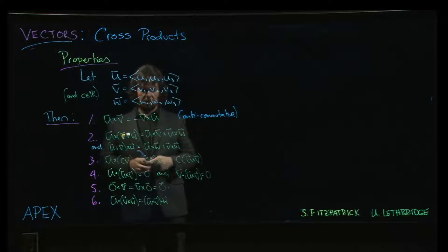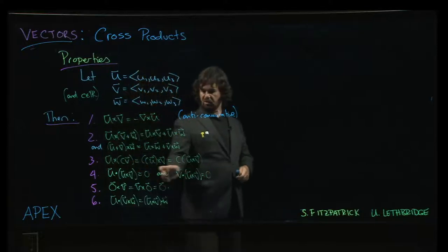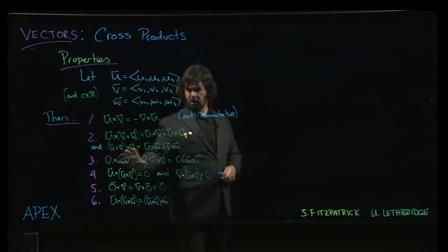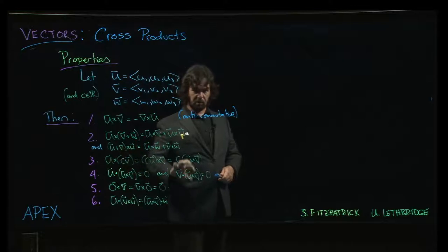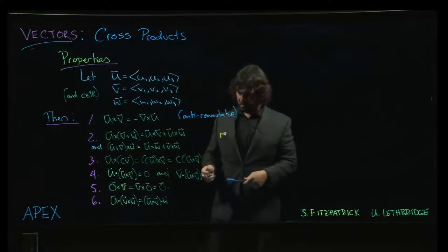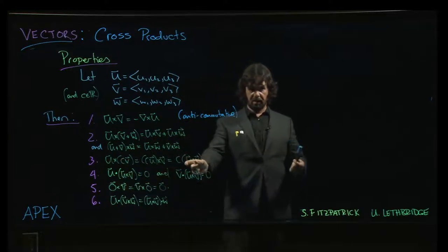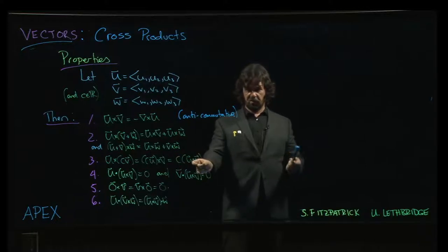Also, cross product does behave well with respect to scalar multiplication. So if you have a scalar you can move it around. You can put it with the first vector or the second or you can pull it out altogether. Remember that the cross product gives you a vector. So this is scalar multiplication of a vector.